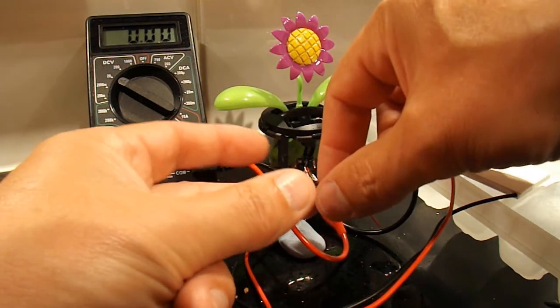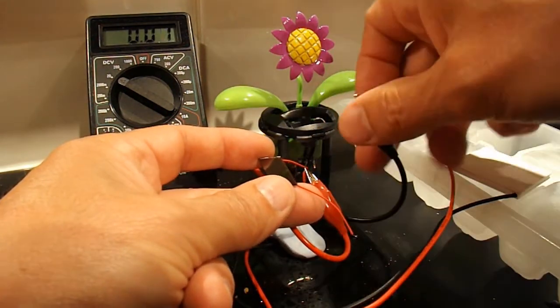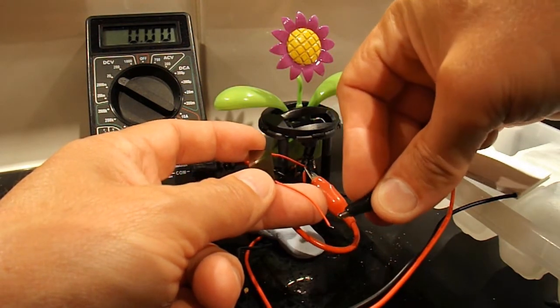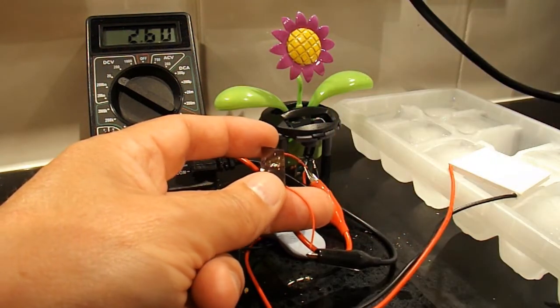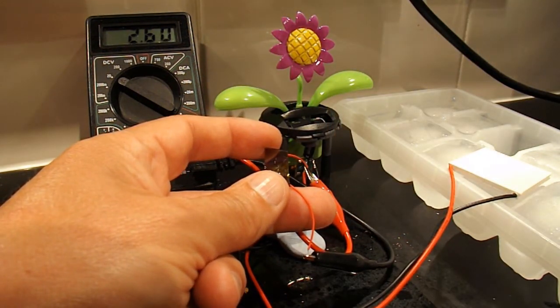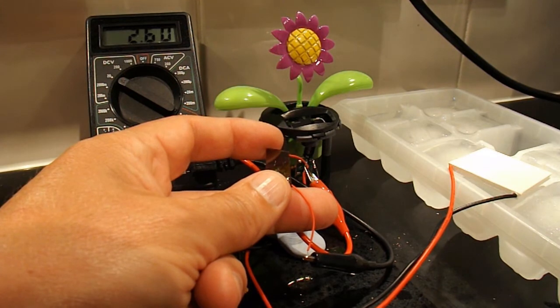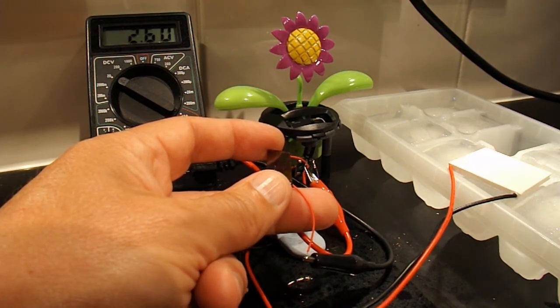If I just connect up the solar panel to my meter here, it's on the 20V scale at the moment. So that's giving me 2.6V in the lights that I've got here in the kitchen.